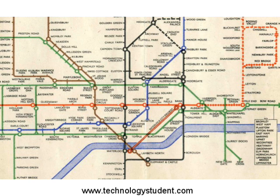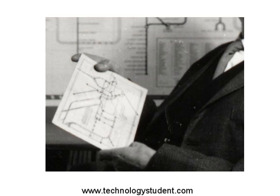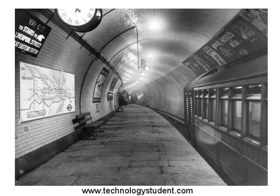The new map was designed in Beck's own time and without a commission from the London Passenger Transport Board. His original sketch was drawn in a school exercise book whilst he was laid off during an economy drive by his employers. At first, the London Passenger Transport Board turned down the map as they considered it unusual and far too revolutionary.